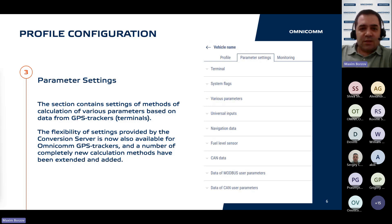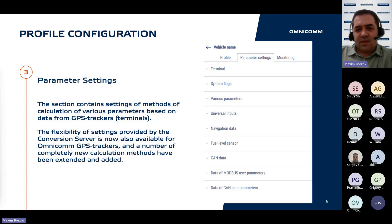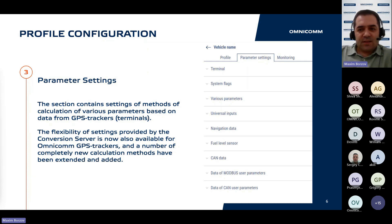The Parameter Settings section introduces functionality previously exclusive to the conversion server, enabling users to map parameters transmitted by the GPS tracker to the Omnicom Online data structure. This process, known as methods of calculation, allows users to select calculation methods for parameters displayed in the log report columns based on raw data received from the GPS trackers.